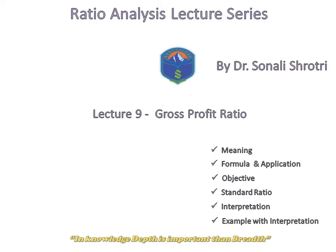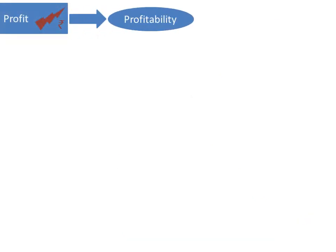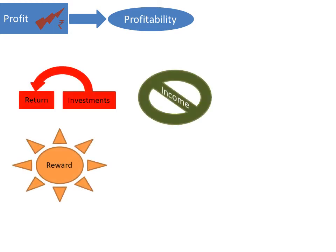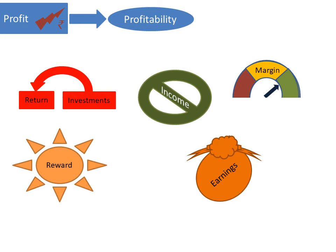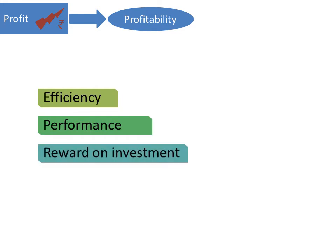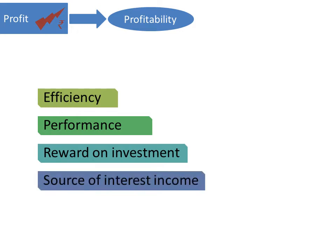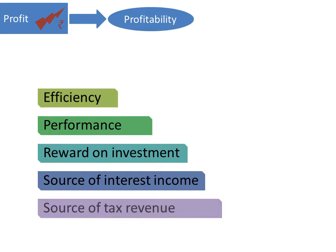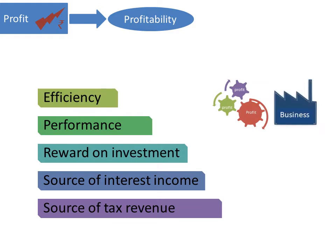This ratio is a measure of profitability. According to Weston and Brigham, profitability is an outcome of profit, and profit means return, reward, income, earnings or margin. To the financial analyst it is the measure of efficiency; to the firm or management it is the measure of performance; to the investors it is the measure of reward of their investment; to the creditors it is the source of interest payment; to the government it is a source of earning through tax. In short, it is the driving force of every business, and profitability is the capacity of a firm to earn profit.